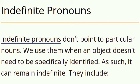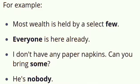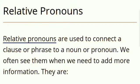Indefinite pronouns don't point to particular nouns. We use them when an object doesn't need to be specifically identified — it can remain indefinite. They include everyone, all, some, anything, nobody. For example: most wealth is held by a select few. Everyone is here already. I don't have any paper napkins, can you bring some? Nobody. So here you can see: few, everyone, some, nobody, all are indefinite pronouns.